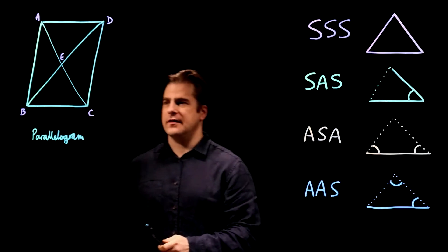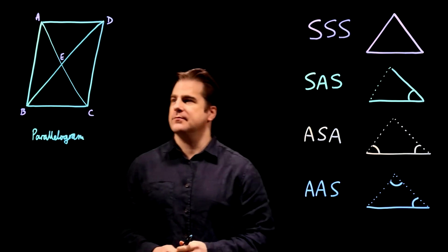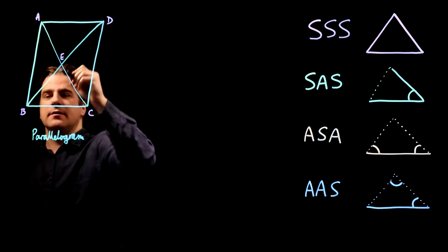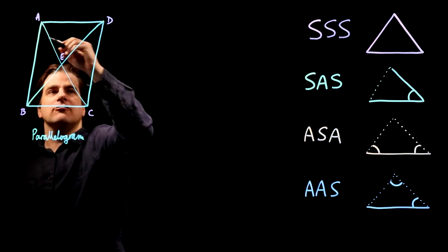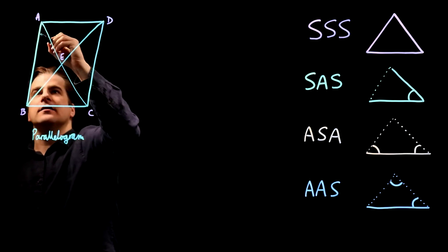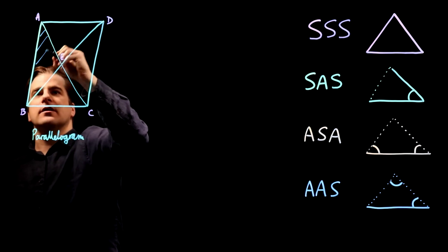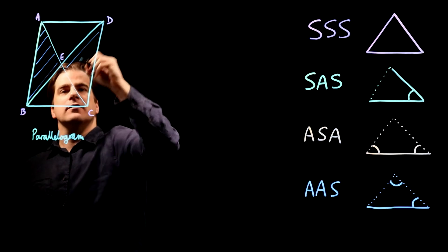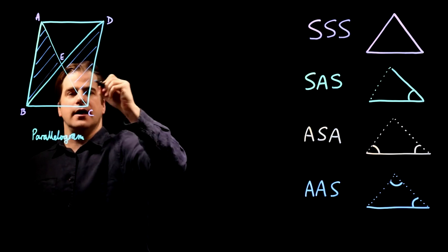Right, we've been handed a parallelogram, and we have to prove that triangle ABE is congruent to CDE. So it's this one here, congruent to this one here.